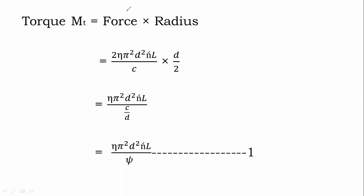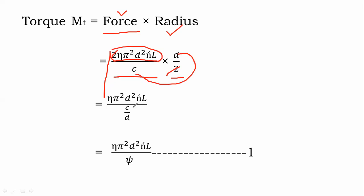Torque equals force times radius. Using the force calculated previously, and radius = d/2, the two in the denominator and the two in the numerator cancel. This gives torque T = η·π²·d³·N'·L / c. Noting that c/d = ψ, we can write this as Equation 1.